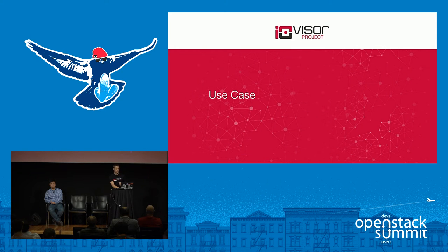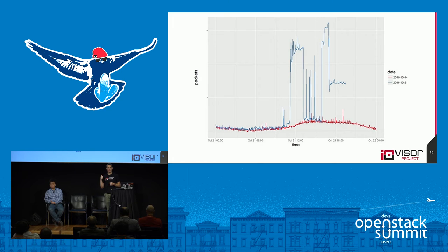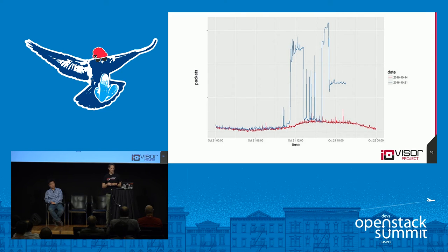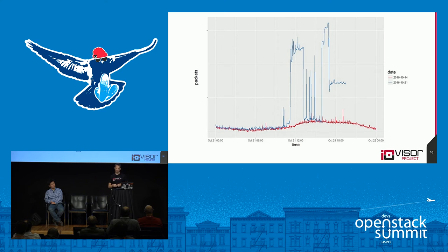Now getting to a use case — does anyone know what this graph signifies? This happened Friday. This is a graph of packets received over time — the packets per second on the level-three network that was front-ending the traffic to the Dyn DNS service. With all the compromised cameras and routers out on the internet, they were flooding the Dyn service with DNS traffic, SYN packets, and various other attacks — which brought Twitter to a halt, for instance.